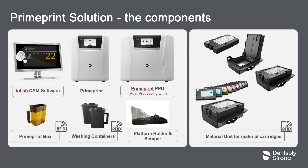After the print is completed, the PrimePrint box must be moved from the printer into the PrimePrint PPU, or post-processing unit. Thanks to a robotic arm, post-processing is fully automated. This offers easy material handling and 3D printing and post-processing without direct contact with resins.